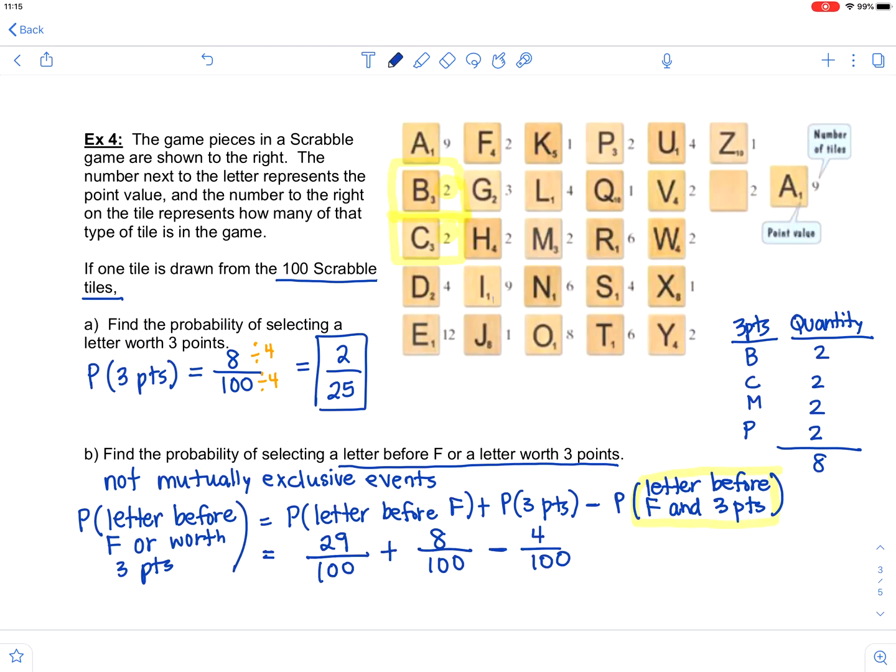You don't want to reduce those because you want that common denominator, so you can reduce at the end. So now if you combine the 29 plus 8 minus the 4, you get a probability of 33 out of 100. So just remember if the events are not mutually exclusive, then you have to add the probabilities together and then subtract the probability of both the events occurring at the same time.